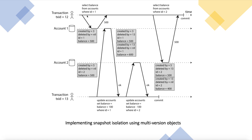The user in transaction 12 first finds out the balance of account one and sees 500. Then transaction ID 13 begins and wants to transfer 100 rupees from account two to account one. It updates account one's balance with plus 100. The 'created_by' field for the new row changes to 13, the previous row gets 'deleted_by' set to 13, and the new row has 'deleted_by' as nil. The balance becomes 500 plus 100, which is 600.